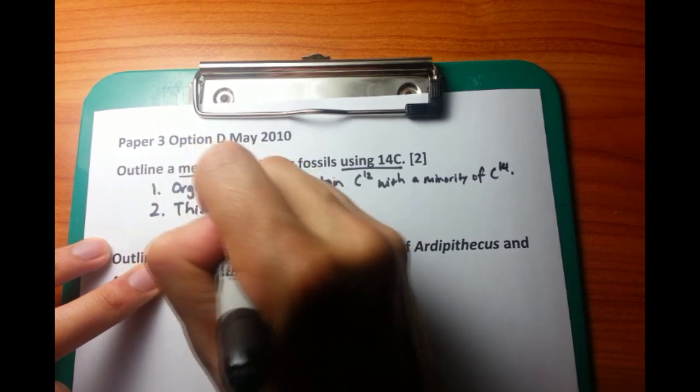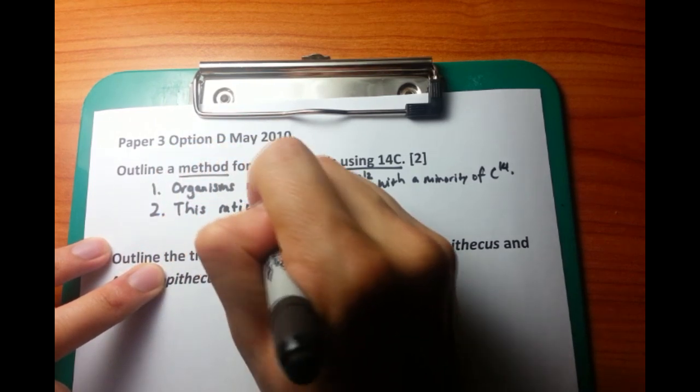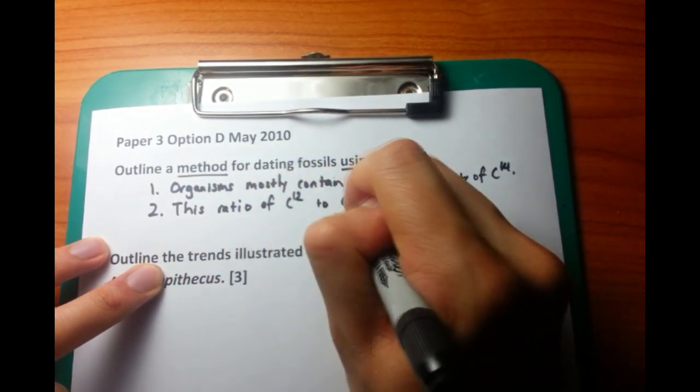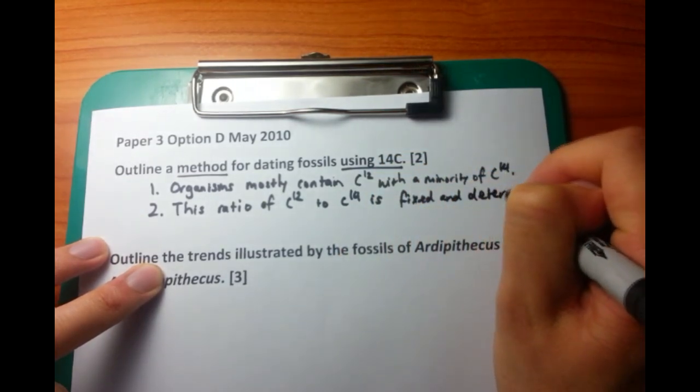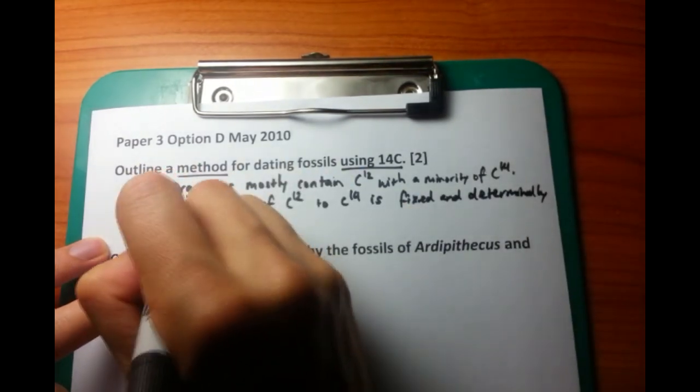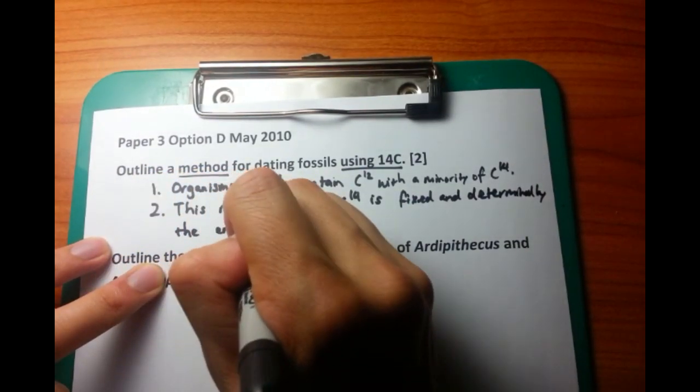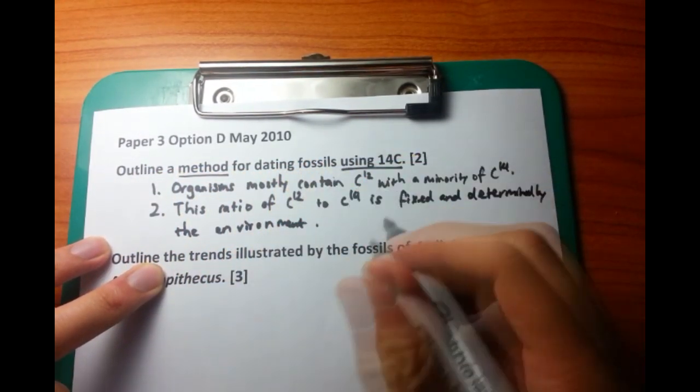So this ratio of 99 to 1, which we were given, is fixed and determined by the environment. A small proportion of carbon molecules, which might be uptaken through ingestion of food, is going to be in the same ratio, 99 to 1. This is just an example, of course.